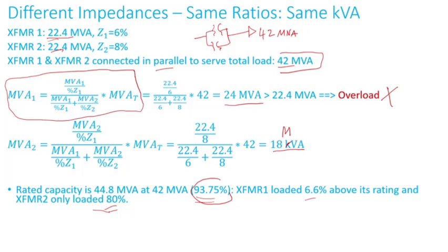Impedance plays a very important role. In this case, you have to decrease the load, match the impedances, or change the transformer. You have to do something — basically you cannot parallel these two transformers as-is.